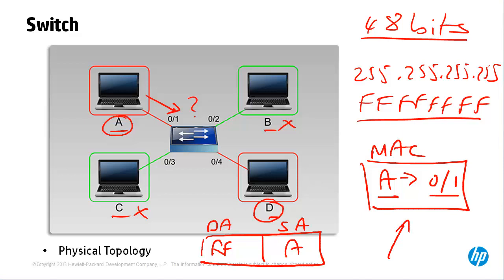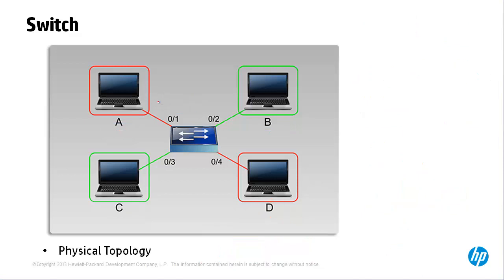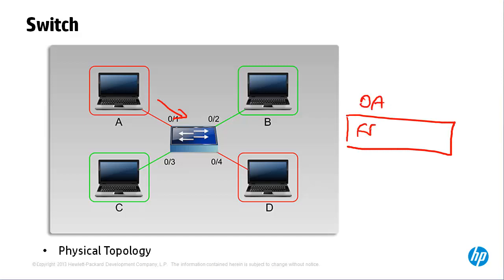What happens with the broadcast — is it flooded out of all ports? When that frame arrives on the port, not only is the MAC address table updated, but the frame is also internally marked. So we've got a frame with a destination address of all Fs and source address of A, and internally it's marked as the red VLAN. There's an internal marking within the switch to denote that this frame arrived on a red port. The PC is unaware that it's in a VLAN — it's a standard Ethernet frame with no marking or tagging. The switch, however, marks the frame internally as a red VLAN frame.